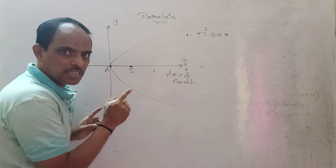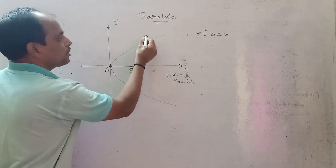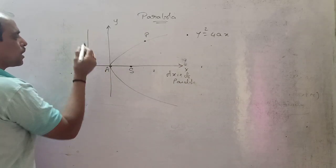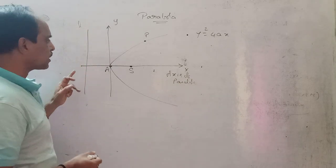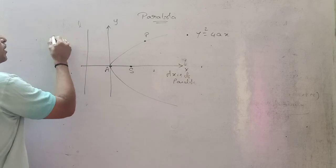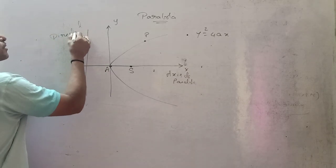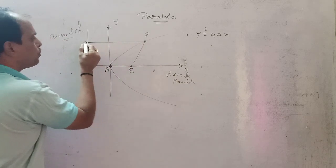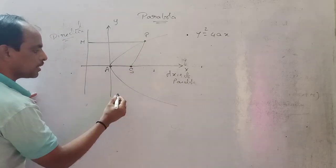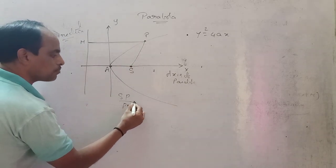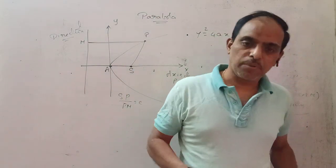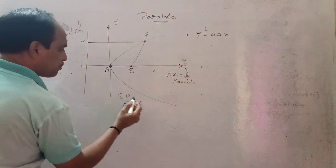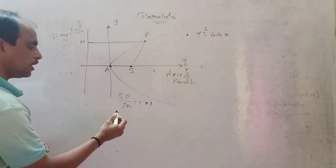Here is a fixed point that is called the focus. Here is a point P, a variable point on the parabola. This line is called the directrix. The distance SP and the perpendicular distance PM — the ratio SP by PM is called eccentricity, which is equal to 1 for the parabola.